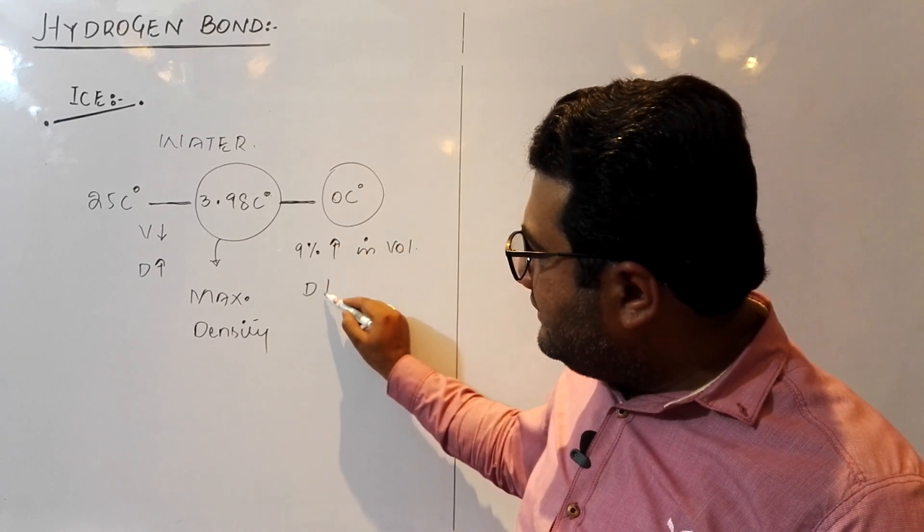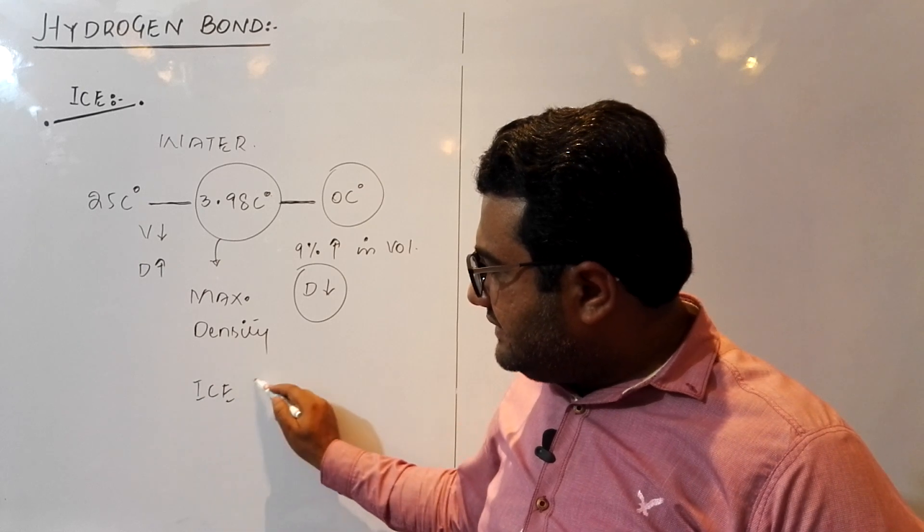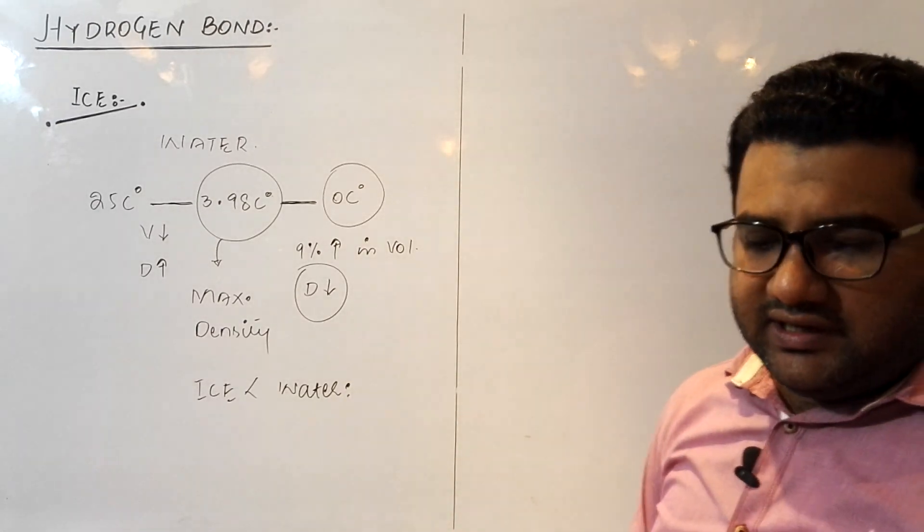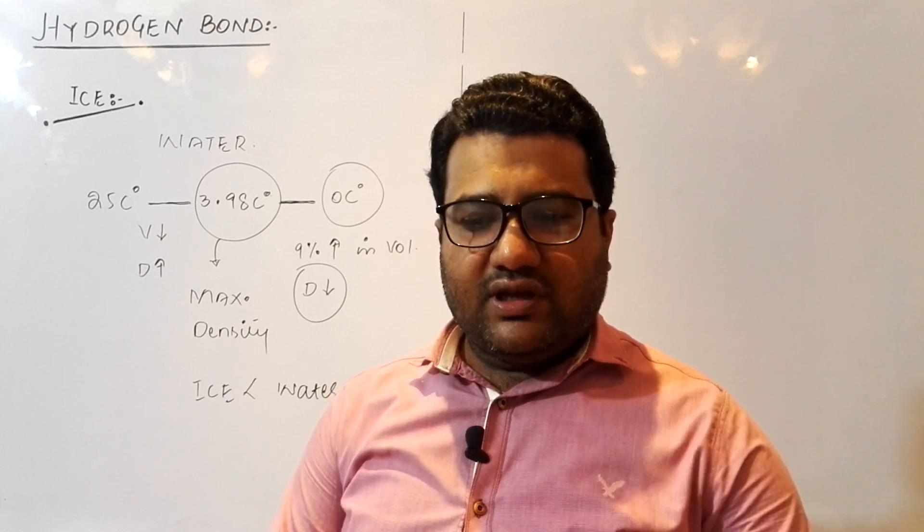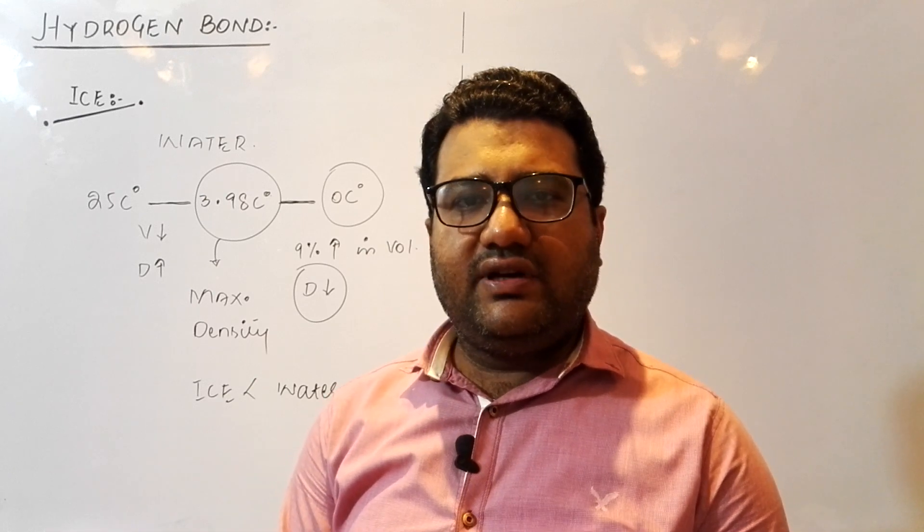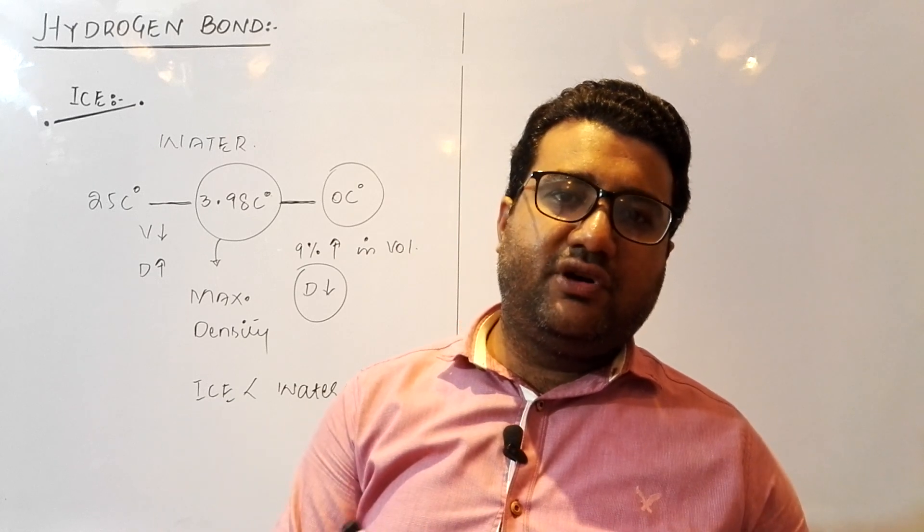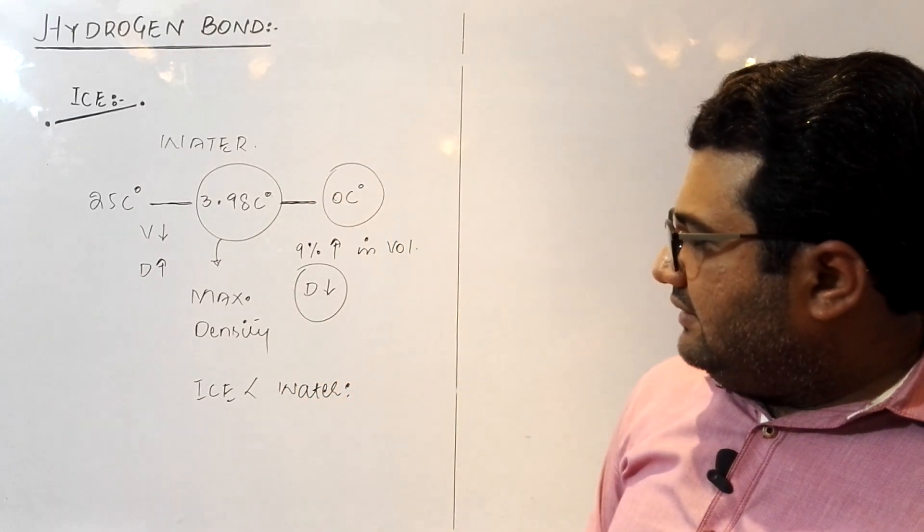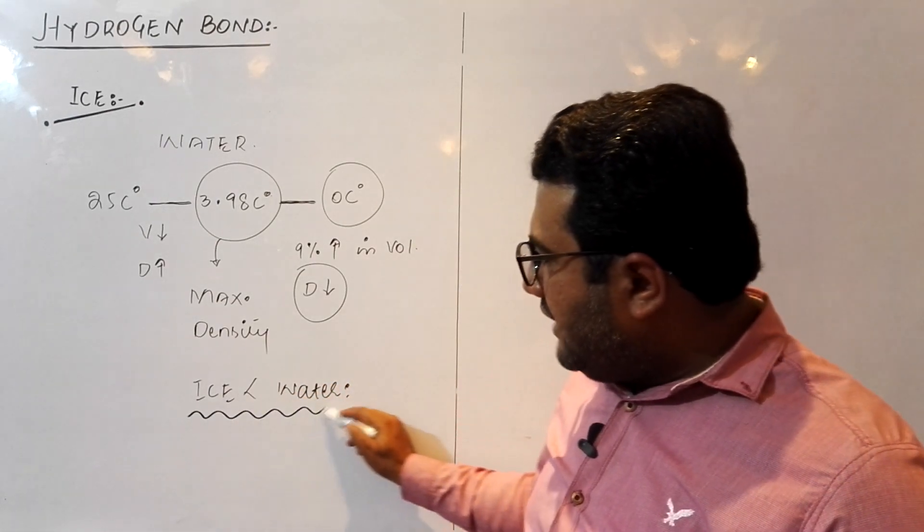Because the position will be fixed, there will be 9% increase in volume. Because the volume is increased, density will be decreased. The density of ice will be less than that of water. That's why ice floats on water. It is very important in areas where it is very cold. The ponds and rivers have a layer of ice on them. That layer of ice is insulated. It doesn't allow the atmosphere to decrease the temperature of the water beneath that layer. So the aquatic life can easily live there.